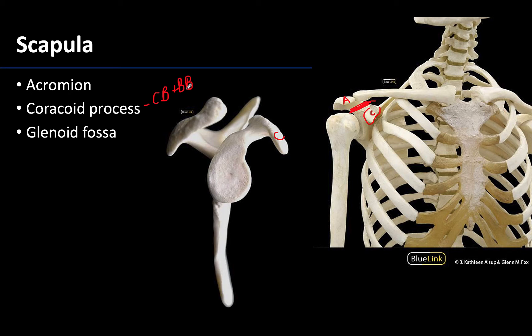Located laterally you will have a shallow depression called the glenoid fossa, sometimes referred to as the glenoid cavity. This is the socket in the shoulder ball-and-socket joint, where the head of the humerus will articulate. Notice how shallow this region is, particularly in comparison to the head of the humerus.